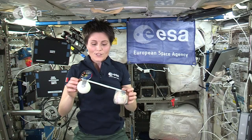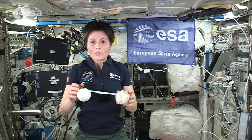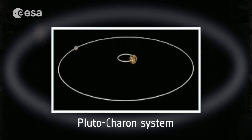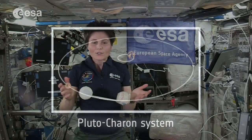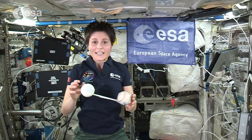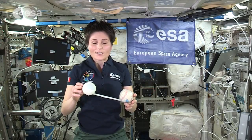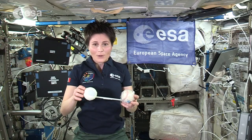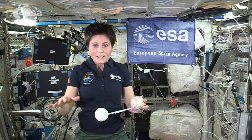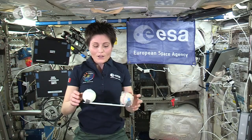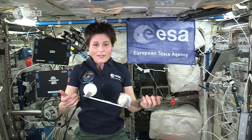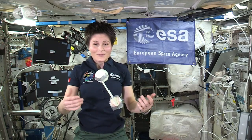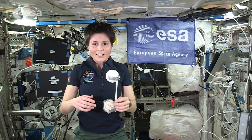Examples of such systems in cosmic objects are, for example, the Pluto-Charon system, but also our Earth-Moon system. In that case, the center of mass is about 1,700 km beneath the surface of the Earth. So, while these objects are weightless, and I am weightless, mass still exists.